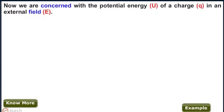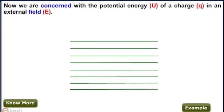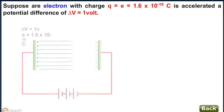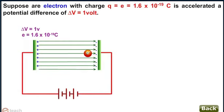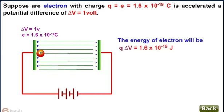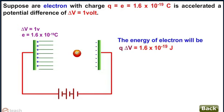Let us consider the potential energy of Q. Suppose one electron with charge Q equals e which equals 1.6 into 10 to the power minus 19 coulomb is accelerated through a potential difference of delta V equals 1 volt. Then find the energy of electron.